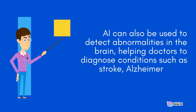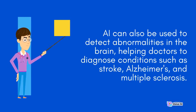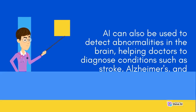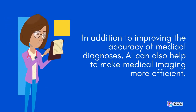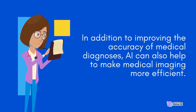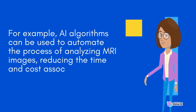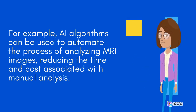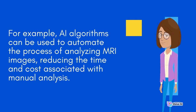AI can also be used to detect abnormalities in the brain, helping doctors to diagnose conditions such as stroke, Alzheimer's, and multiple sclerosis. In addition to improving the accuracy of medical diagnoses, AI can also help to make medical imaging more efficient. For example, AI algorithms can be used to automate the process of analyzing MRI images, reducing the time and cost associated with manual analysis.